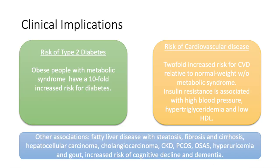The two major clinical implications of metabolic syndrome are the risk of type 2 diabetes — in which obese people with metabolic syndrome have a tenfold increased risk — and the risk of cardiovascular disease. Patients with metabolic syndrome are twice as likely to suffer from cardiovascular disease than the general population. Insulin resistance is also associated with high blood pressure, hypertriglyceridemia, and low HDL.